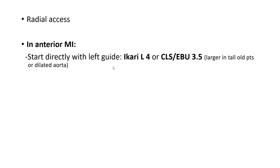One question that comes up is whether you should go directly with a guiding catheter for the culprit. For example, in anterior MI, should you start directly with a left coronary guide catheter, or should you do a right coronary angiogram first, then go with a left coronary guide catheter? In anterior MI, I start directly with a left guide catheter, then do the RCA angiogram at the end after finishing my primary PCI. The guide catheter I start with is ICARI-LEFT-4 or CLS or EBU-3.5, and I choose larger numbers in patients with a dilated aorta or tall, older patients — for example, over 5'11".